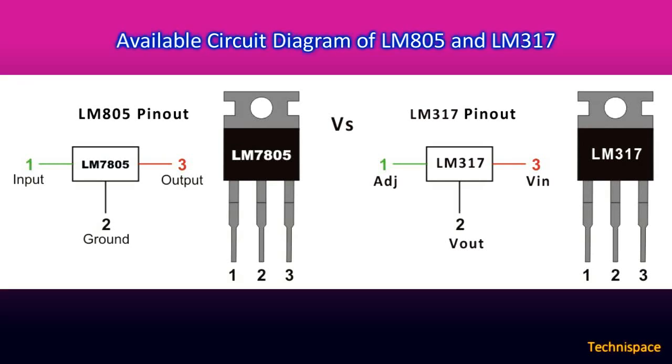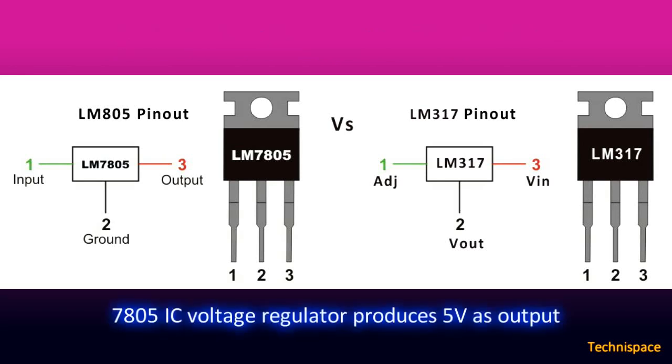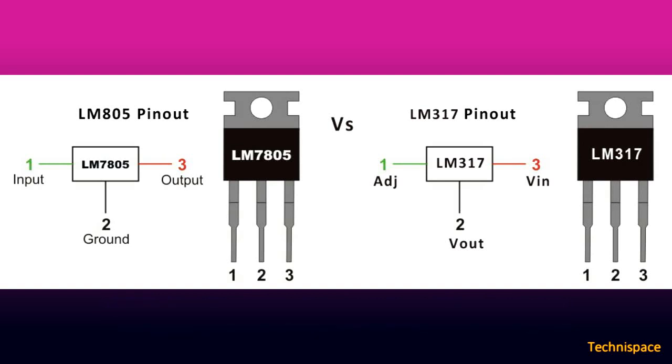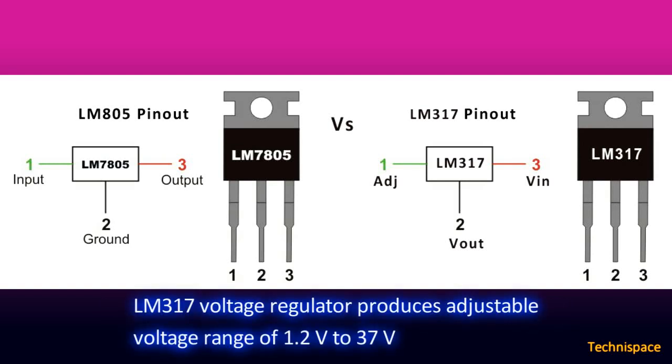The 7805 produces a regulated 5 volt output. The other is LM317, an adjustable three-terminal positive voltage regulator capable of supplying in excess of 1.5 amps over an output voltage range of 1.2 volts to 27 volts.